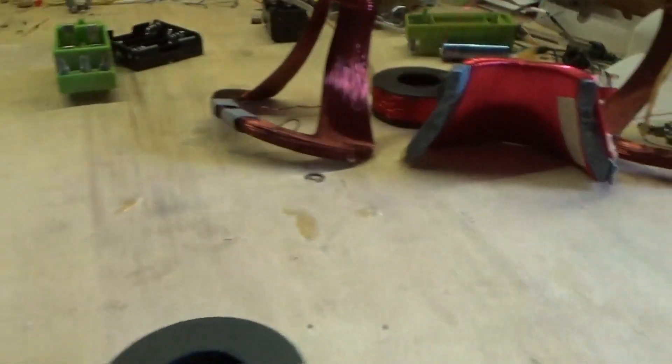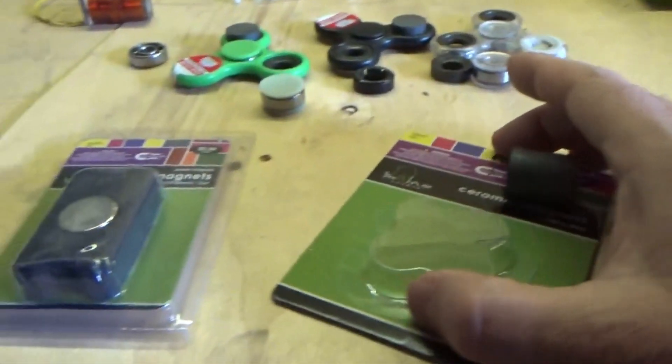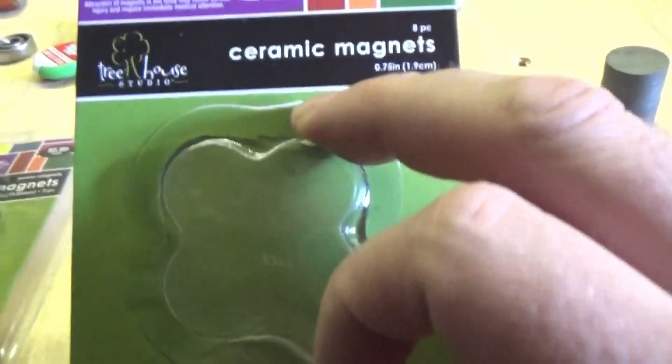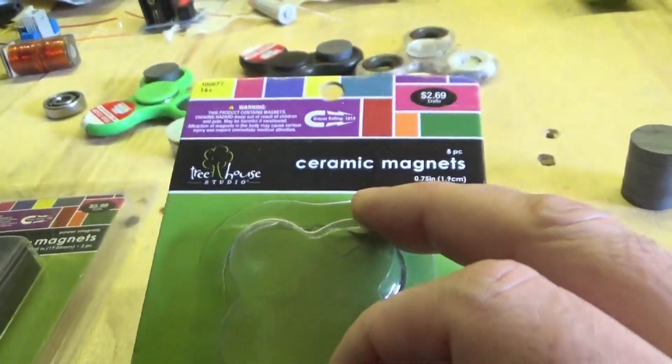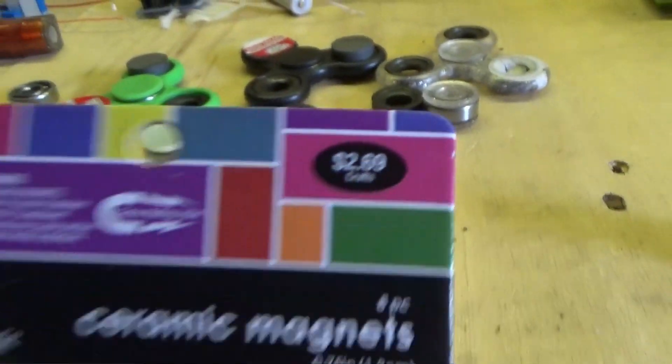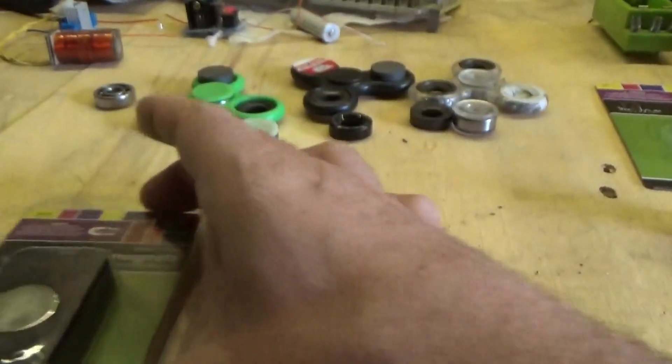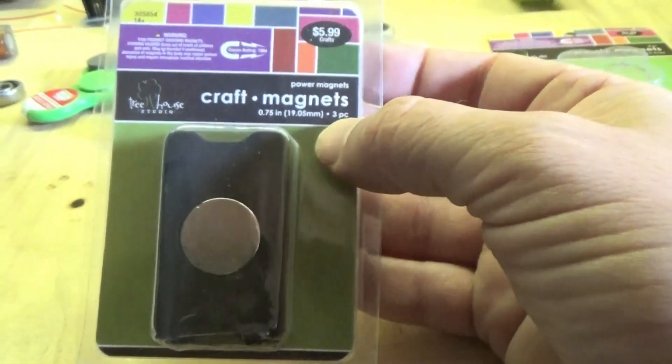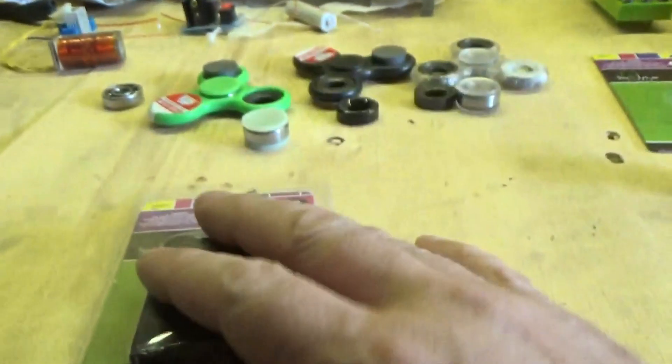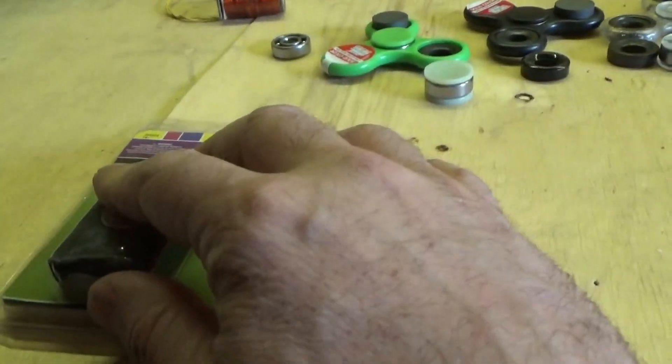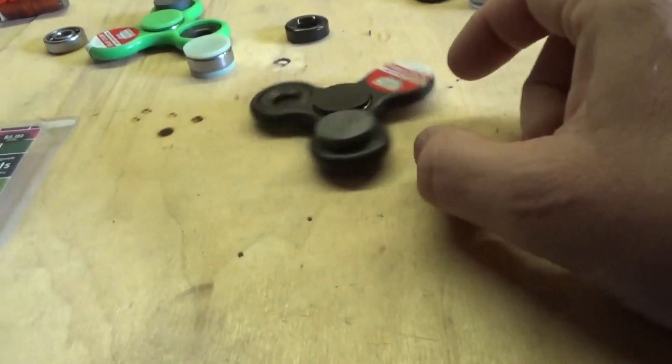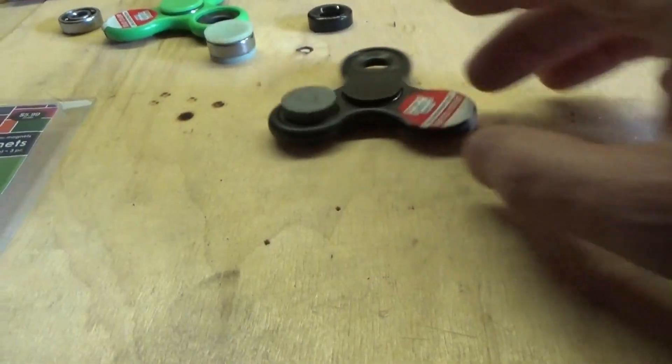Now I went to Hobby Lobby and I found some ceramic magnets - eight pieces for $2.69 - and then I got some heavy duty craft magnets. There's three pieces for $5.99 at Hobby Lobby. Well, three pieces is perfect for a fidget spinner Bedini motor.